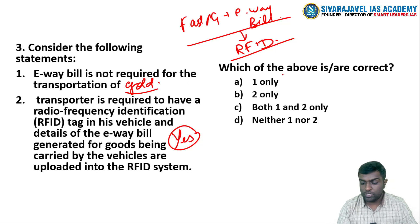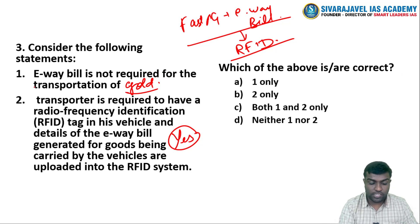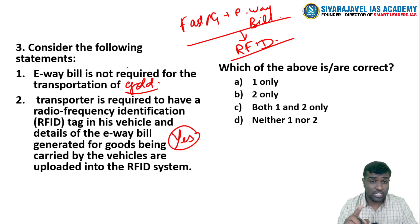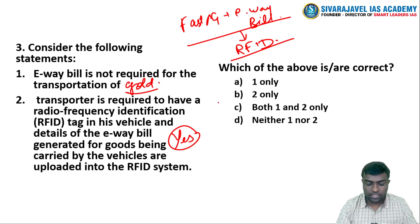So, which of the following statements is or are correct? The first statement — that e-waybill is not required for the transportation of gold — is correct. The second statement is also correct.